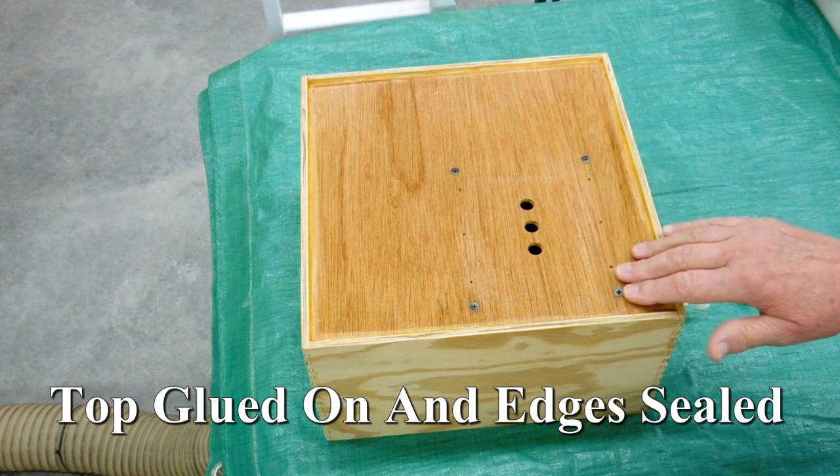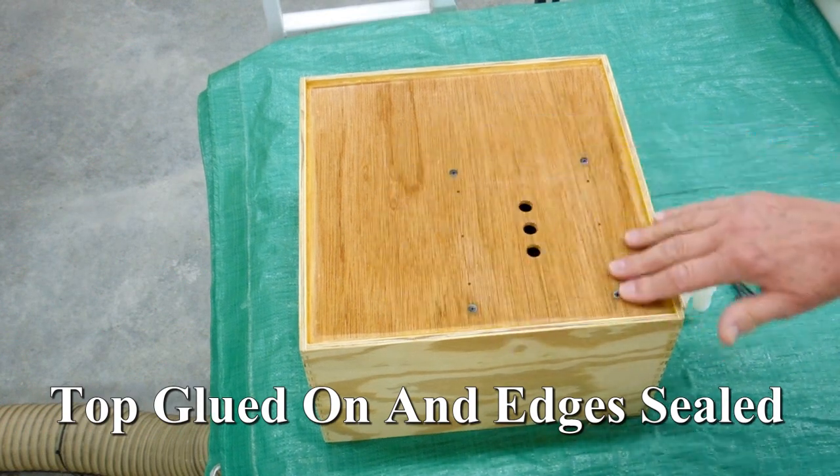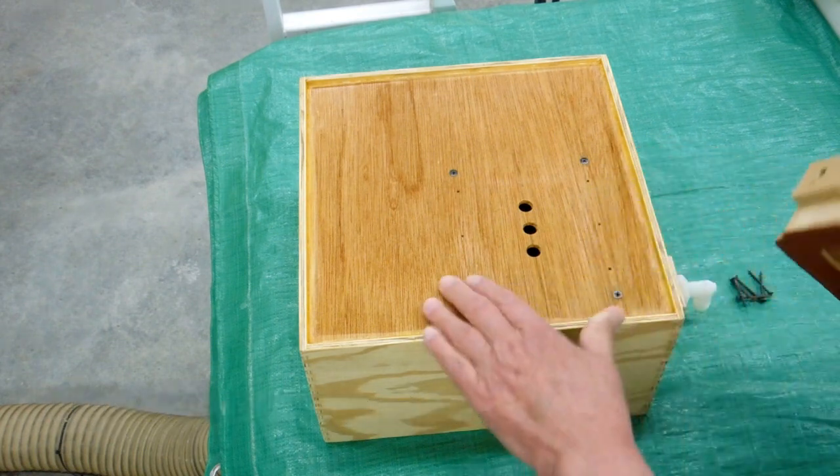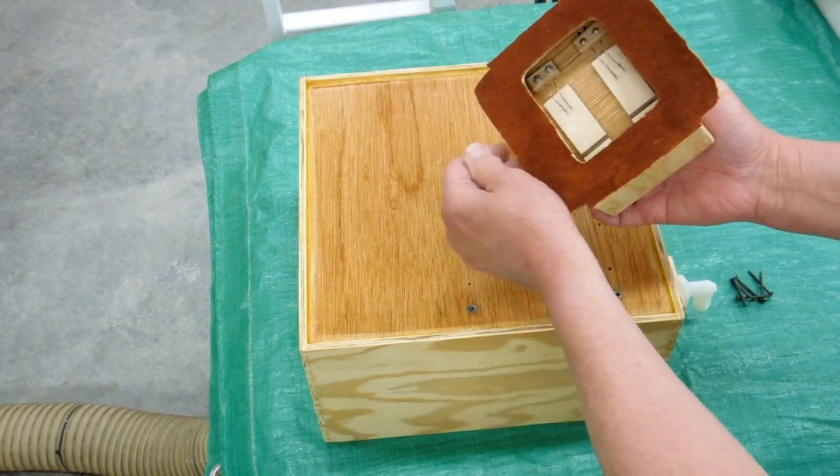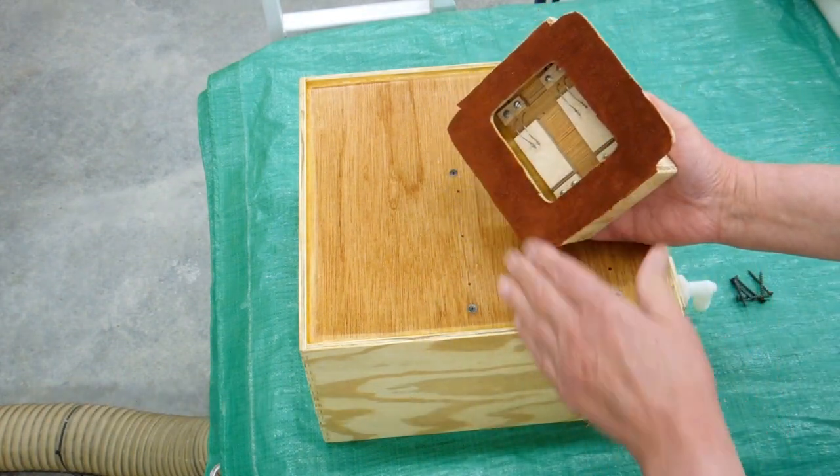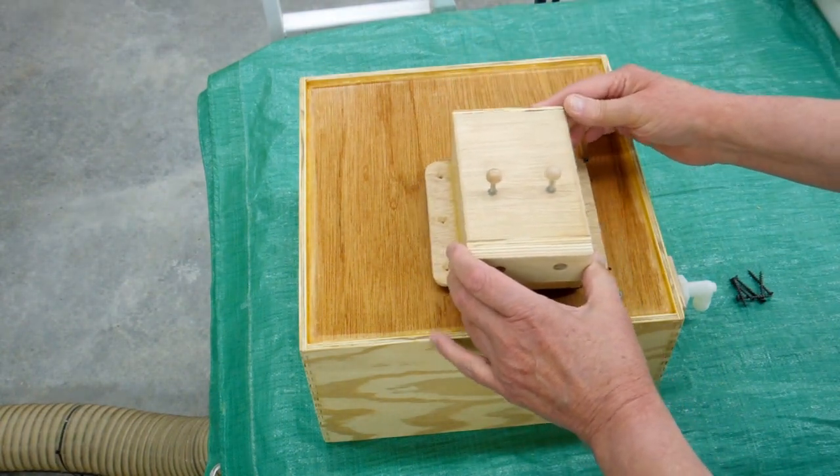The top of the air box has been given two coats of varnish, sanding between coats to seal the wood and to give the leather gasket something to seal against. Now we'll attach the valve box to the top of the air box.